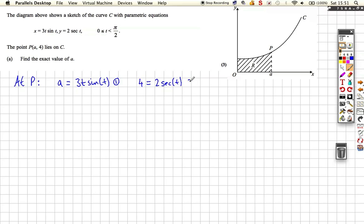So if we call this one 1 and this one 2, let's solve 2 first. So 4 is equal to 2 over cos t. I hope you can see how I've got that, because I've just rearranged the sec to be 1 over cos. Now rearranging this equation, get cos t on its own. Cos t is equal to 2 over 4, which is a half. And now if we do inverse cosine of a half, we work out that t is pi over 3.